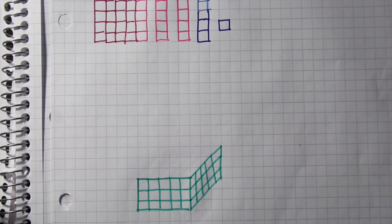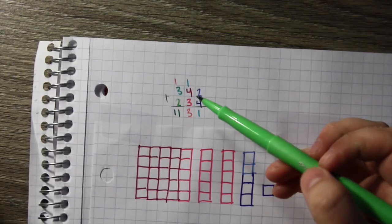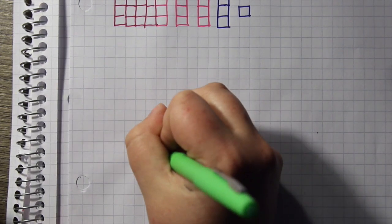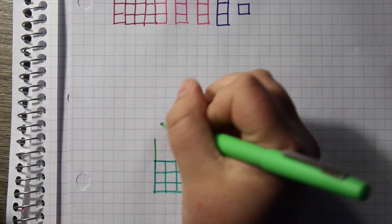So now we're taking our 2 flats from the 200 value, and those are going to be our top 2 layers of this 3 dimensional shape to create the cube of 1000, so I'm drawing that now.